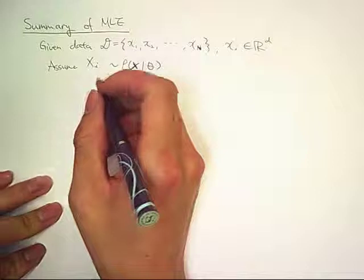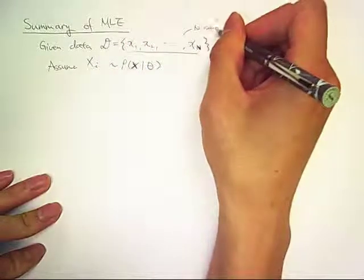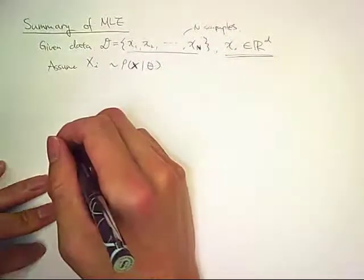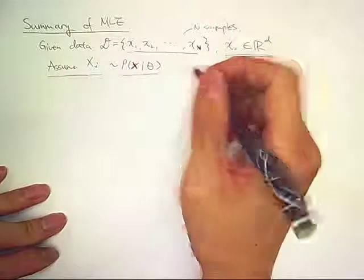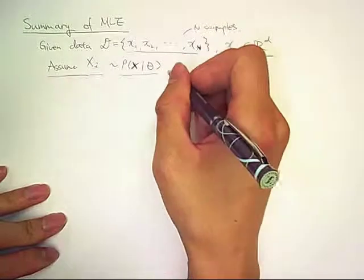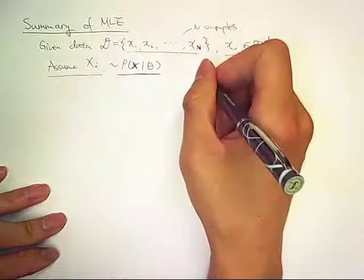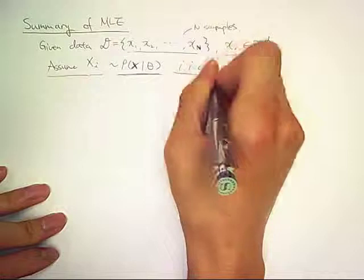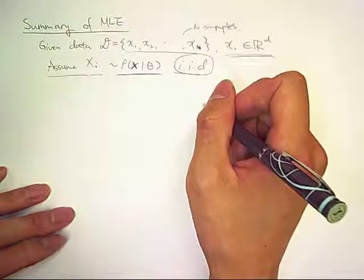Given data D, we have N number of samples. Each sample belongs to a D-dimensional feature space. Now, assume each sample is drawn from a family of distributions with unknown parameter theta. We're going to have an IID assumption, which means each sample is independent and identically distributed.